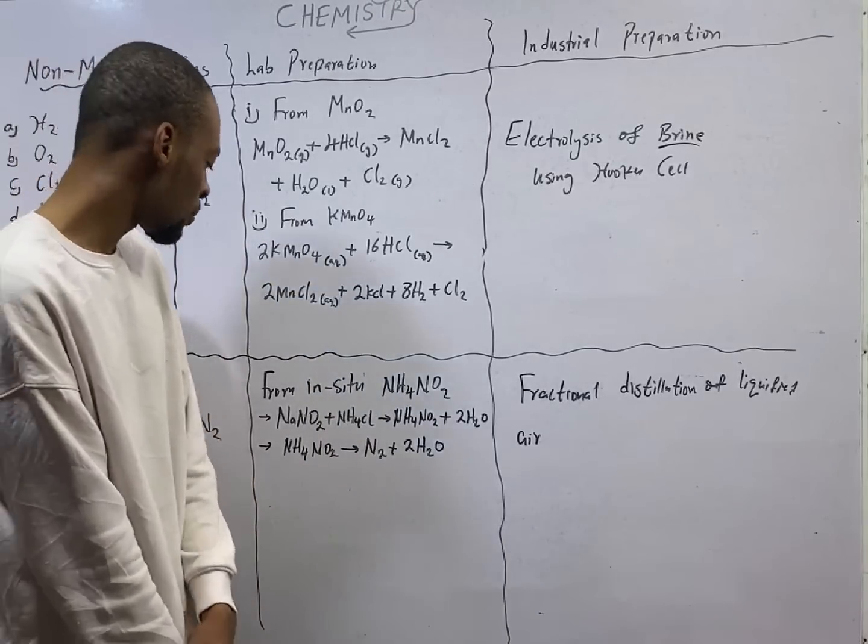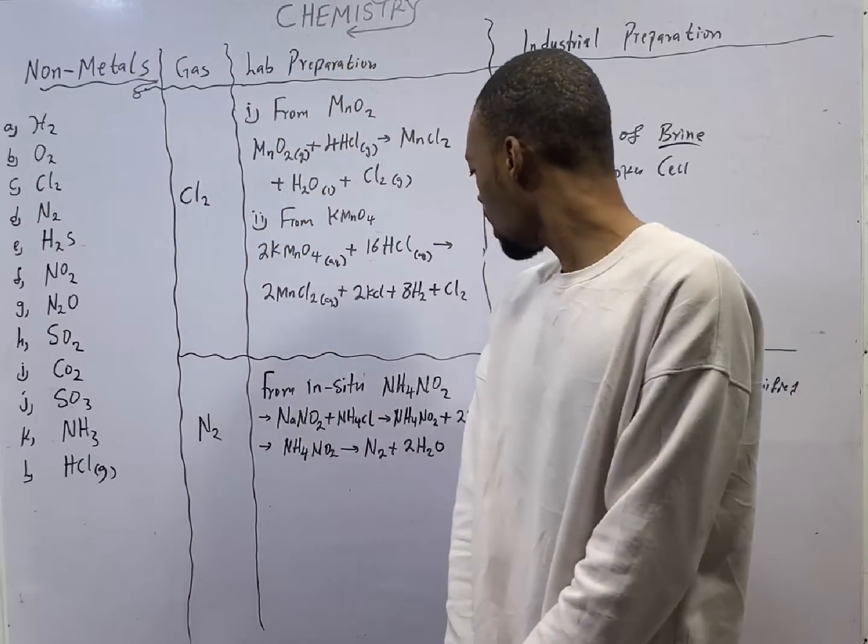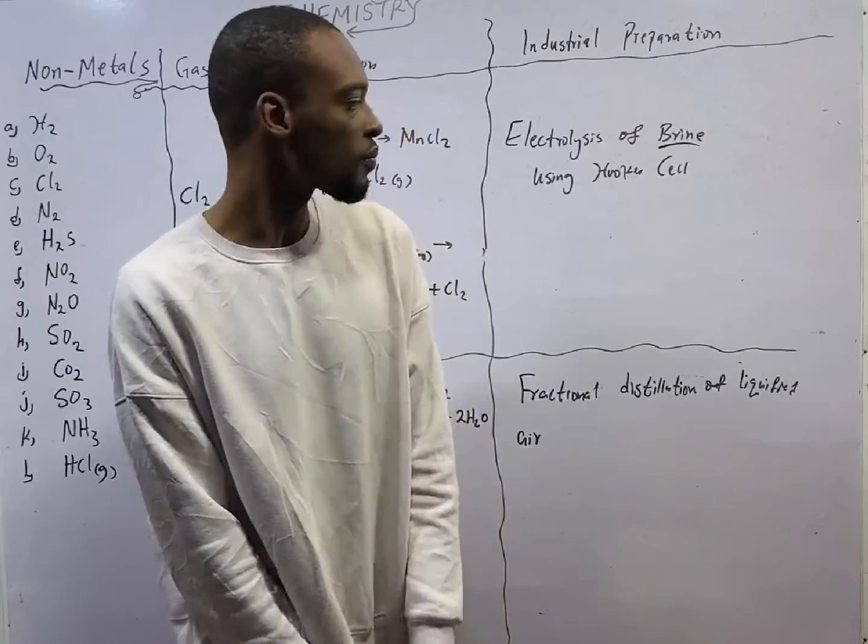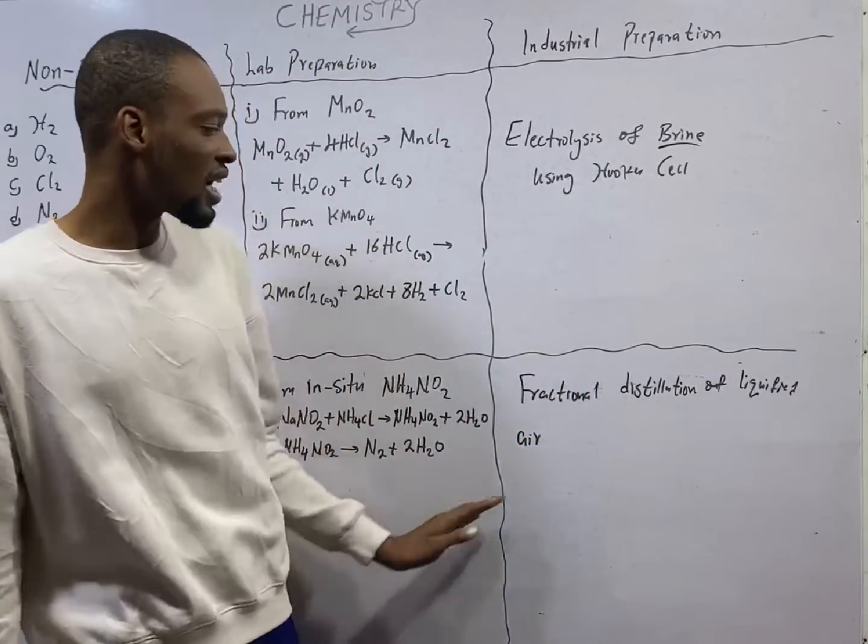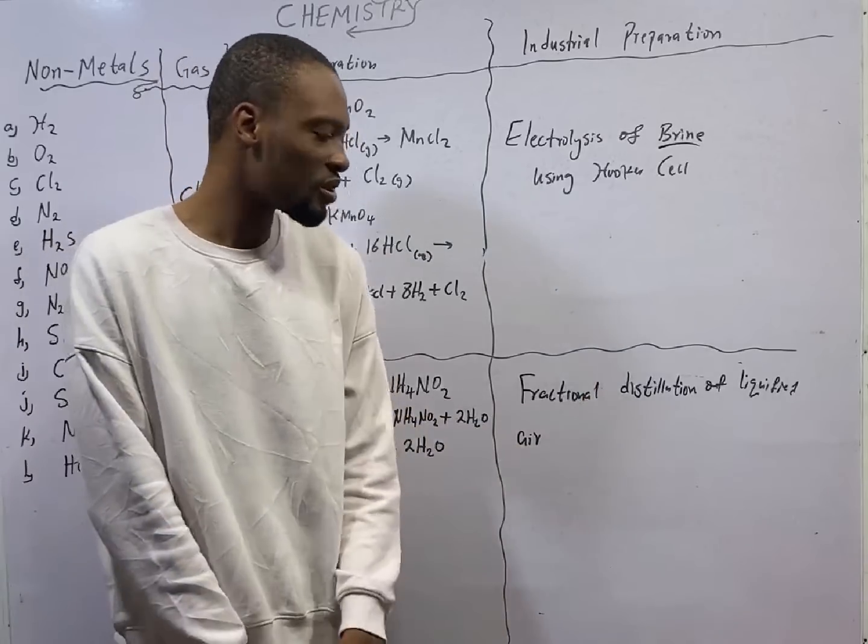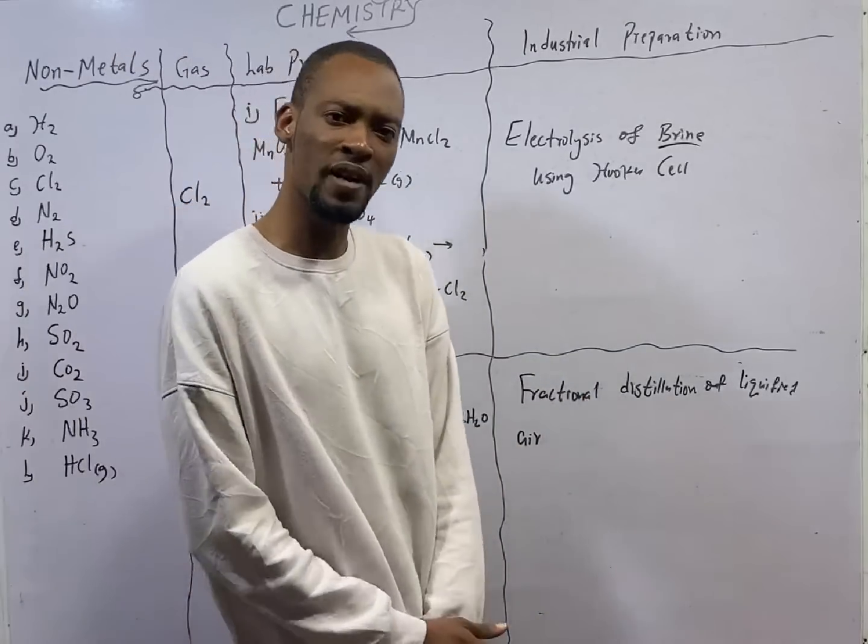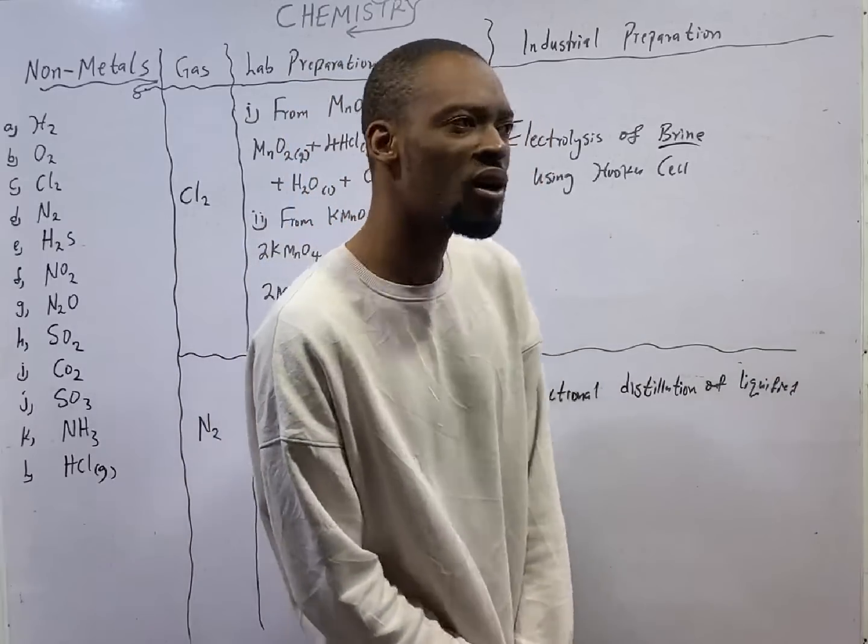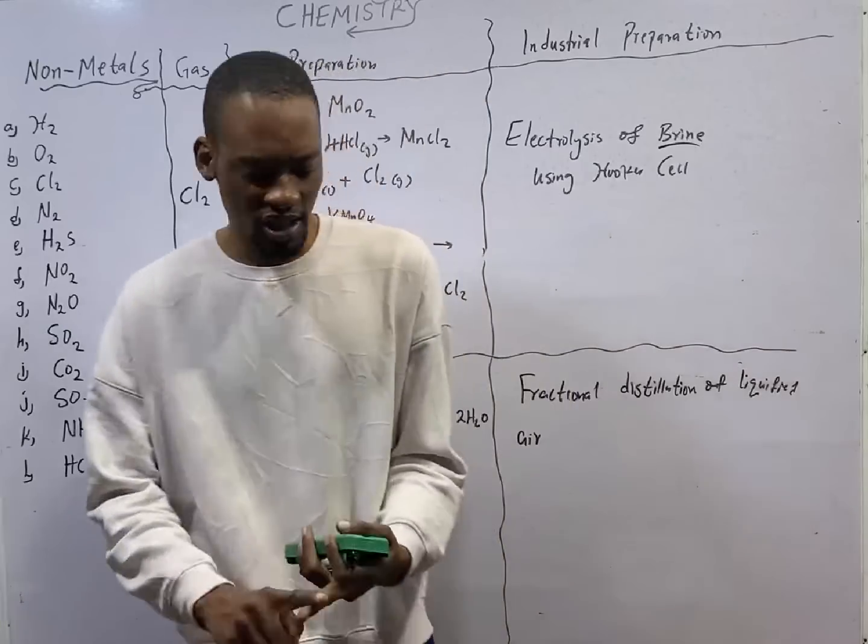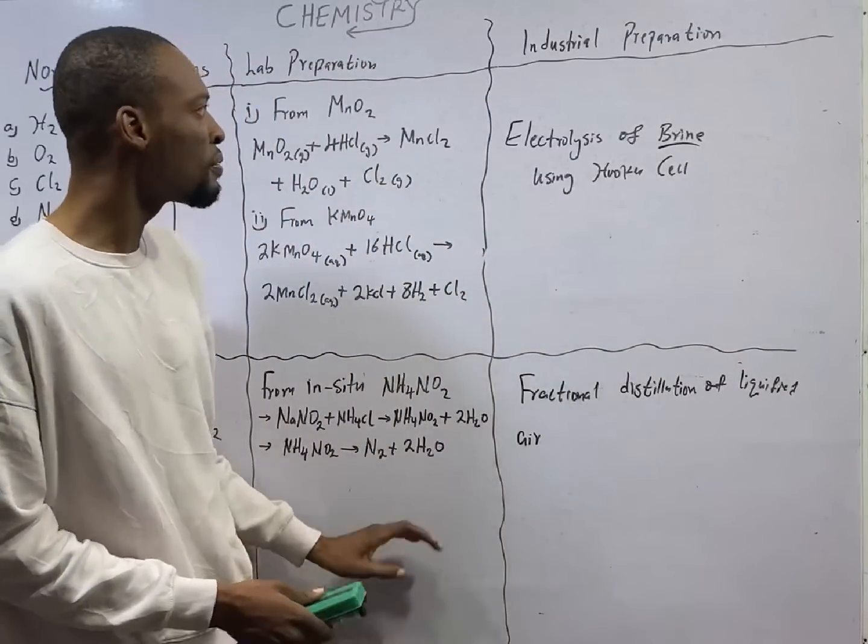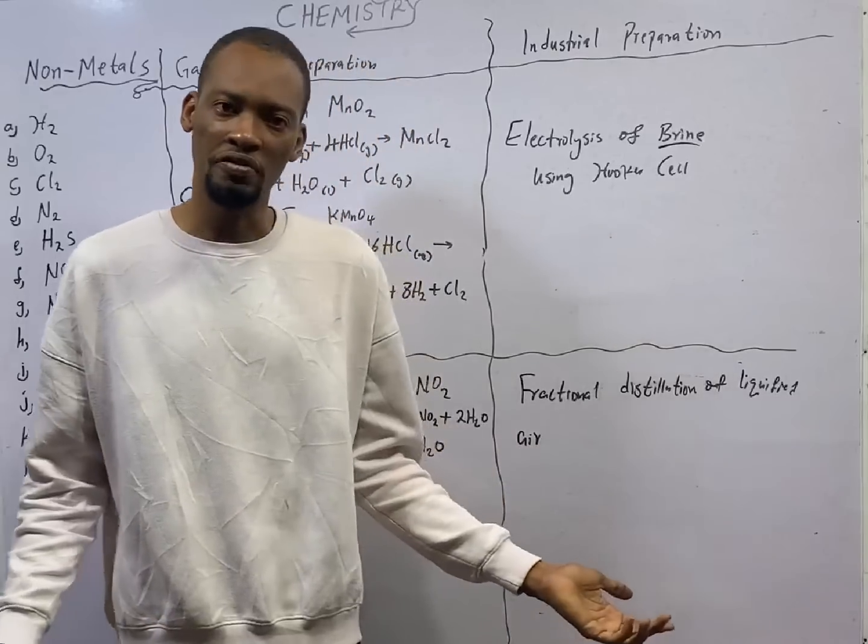So, in the lab, we prepare nitrogen gas from in-situ ammonium diazol nitrate. Then in the industry, we prepare nitrogen gas using fractional distillation of liquefied air. I already explained liquefied air in the previous episode under the preparation of oxygen, which implies that oxygen and nitrogen can both be prepared in the industry via fractional distillation of liquefied air.